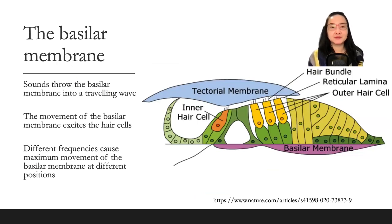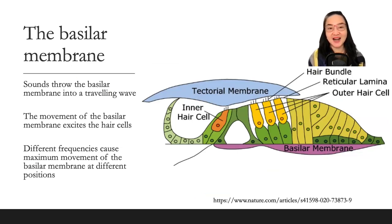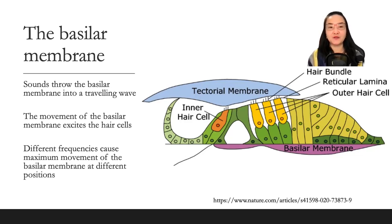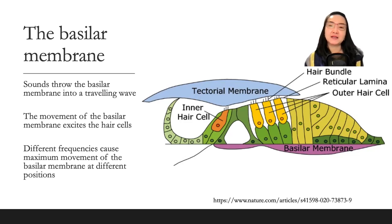Each pulse of the oval window causes a pulse to travel along the basilar membrane. Each point on the basilar membrane moves up and down as the pulse travels past it. The distortion of the cilia of the inner hair cells — the auditory receptors — causes action potentials in the fibers of the auditory nerve innervating the basilar membrane. The basilar membrane is thrown into a traveling wave by sounds. The movement of the basilar membrane excites the hair cells, and different frequencies cause maximum movement at different positions. You can also see outer hair cells, hair bundle, inner hair cells, and tectorial membrane in the picture.